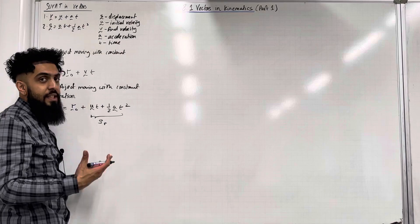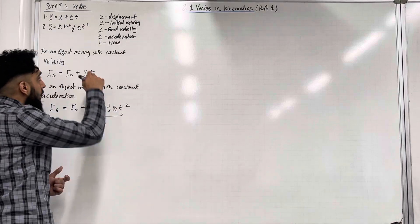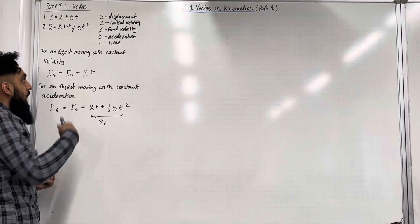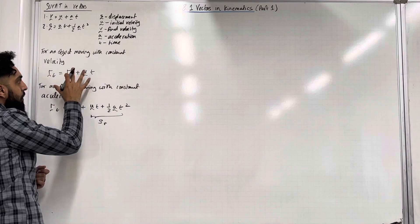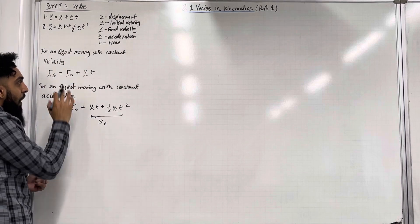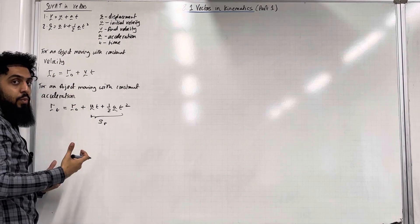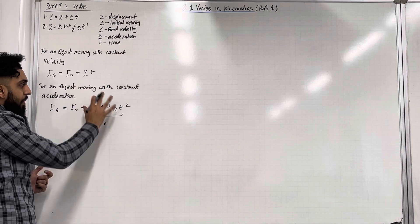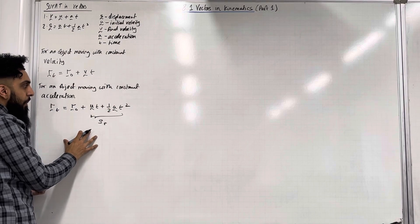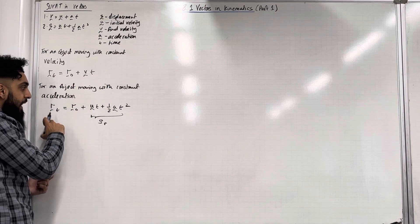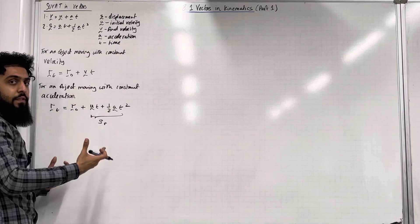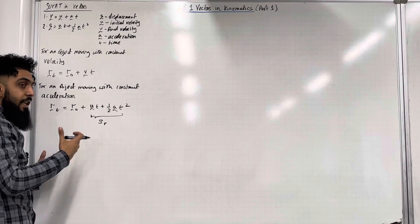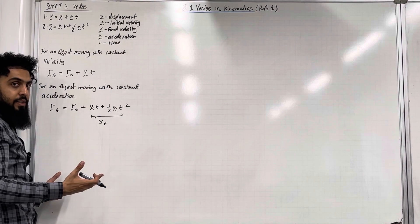Please notice the difference. Here the object is moving with constant velocity — in this scenario you apply the formula R(T) = R₀ + VT. But here the object is moving with constant acceleration — in this scenario you apply the formula R(T) = R₀ + UT + ½AT². Again, R(T) is the position of the object at time T, and R₀ is the initial position of the object.